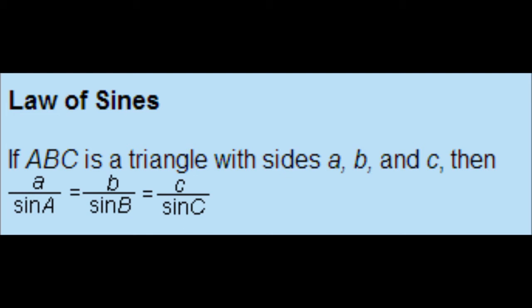The law of sines states that if ABC is a triangle with sides A, B, and C, then A over sine A equals B over sine B, which equals C over sine C.